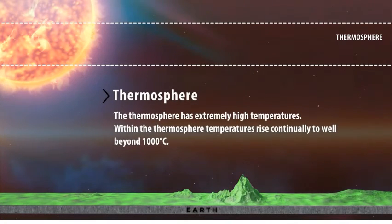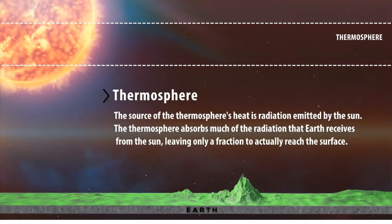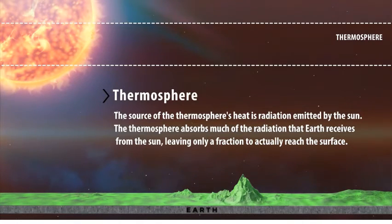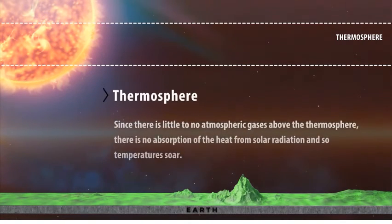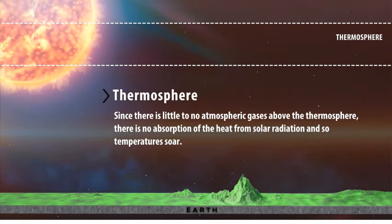The thermosphere has extremely high temperatures, rising continually to well beyond 1,000 degrees Celsius. The source of the thermosphere's heat is radiation emitted by the sun. The thermosphere absorbs much of the radiation that Earth receives from the sun, leaving only a fraction to actually reach the surface. UV radiation, visible light, and high-energy gamma radiation are all absorbed by the thermosphere. Since there is little to no atmospheric gas above the thermosphere, there is no absorption of heat from solar radiation and so temperatures soar.